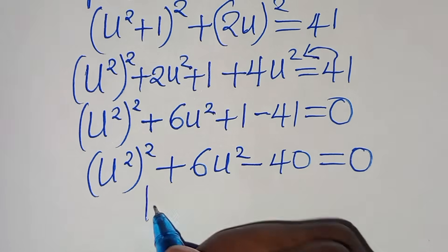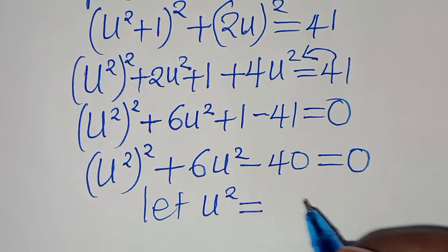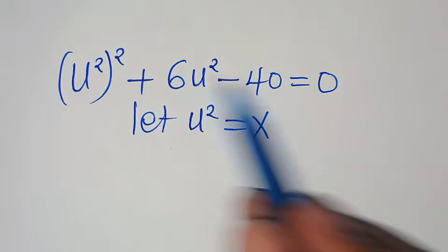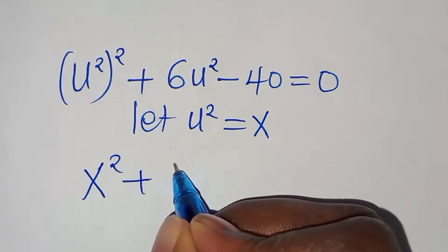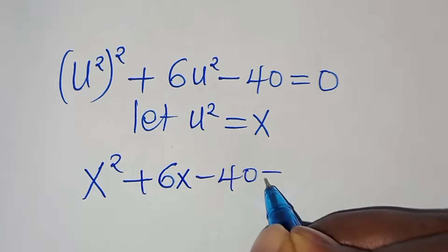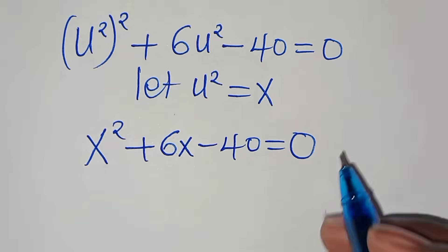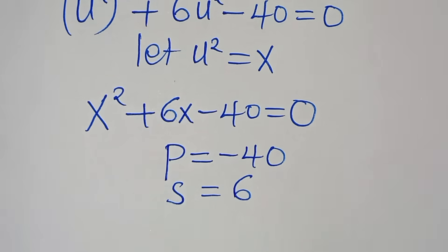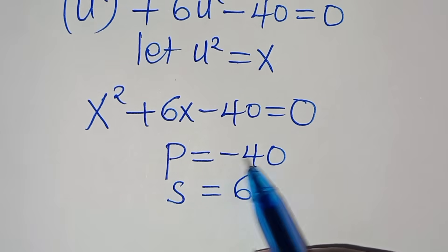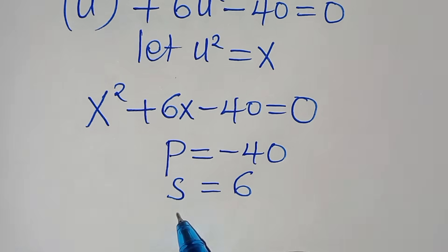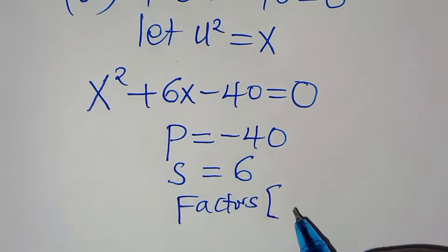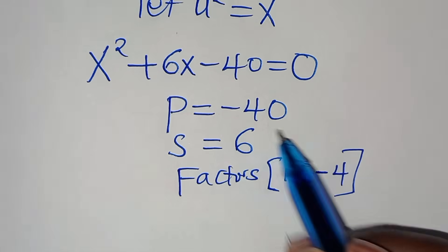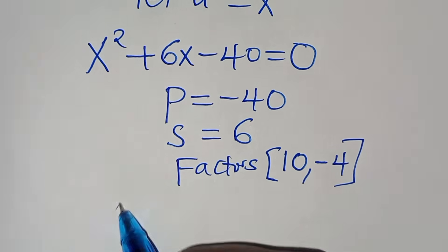We let x = u². Substituting gives x² + 6x − 40 = 0. This is a quadratic we solve by factorization. We need two factors whose product is −40 and whose sum is 6. Those are 10 and −4, since 10 × (−4) = −40 and 10 + (−4) = 6.